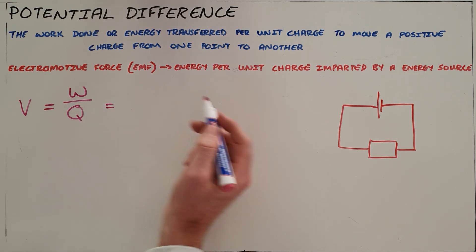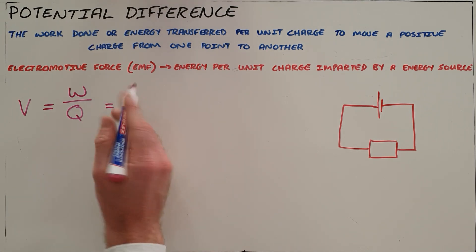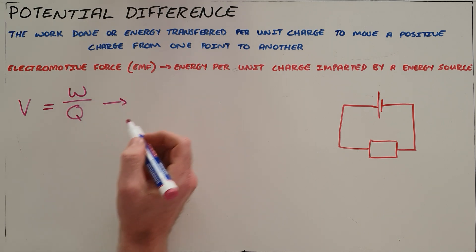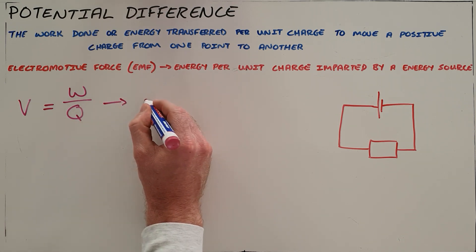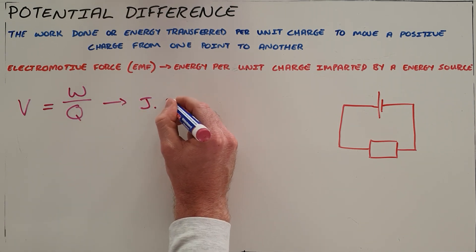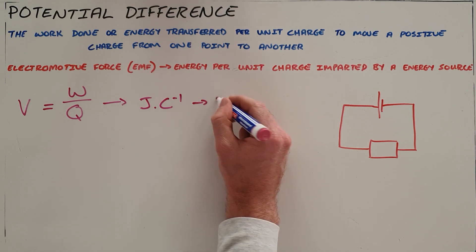We can also see that since work is measured in joules and charge is measured in coulombs, the units here would be joules per coulomb, which we also call volts or abbreviate V.